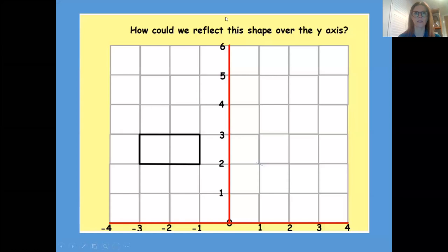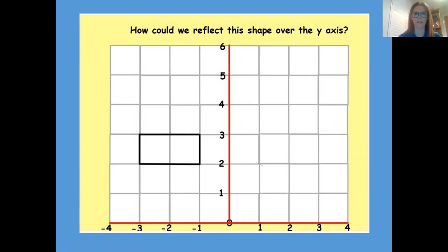Let's see the first thing we need to look at. It says: how could we reflect this shape over the y-axis? So let's remind ourselves of the x and y-axis. You've got the x-axis which runs along the bottom here and the y-axis which goes up the top here. Along the bottom, x — up the stairs, y. If you think about the alphabet, x comes before y, so your x-axis is at the bottom and these are the coordinates you would give first, and then your y-axis going up are the coordinates that you give second. So we need to reflect this shape over the y-axis, over this line here, into this quadrant here.